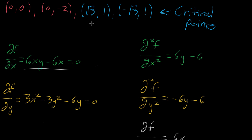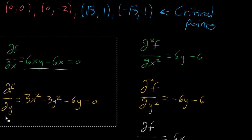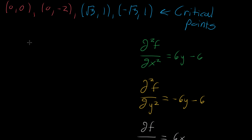Now what we're going to do is plug each of the critical points into the second partial derivative test expression. That expression is: we take f_xx multiplied by f_yy, and subtract off the mixed partial derivative term squared — that is, D = f_xx · f_yy − (f_xy)².